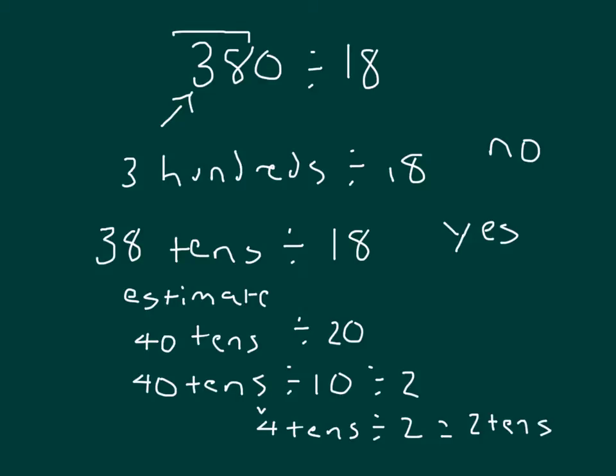So this will help us in figuring out the answer with this estimate here for 380 divided by 18. I'll start showing you the standard algorithm here. Here's 380, here's 18. And remember, we started with could we divide 18 into those 300s, that 300s divided by 18? And the answer to that was no.